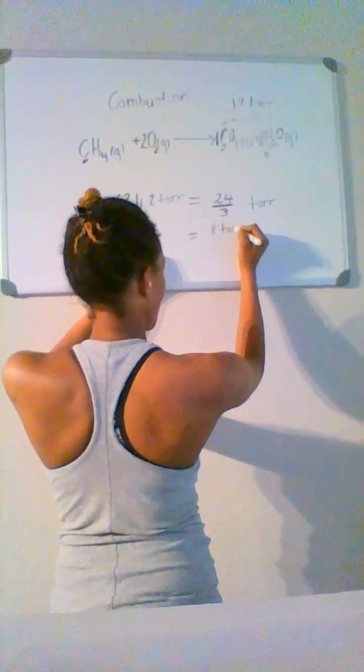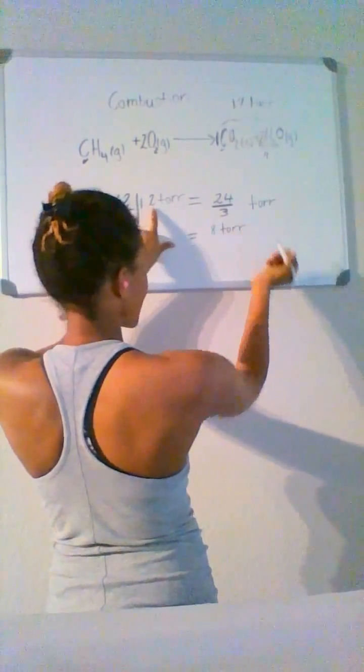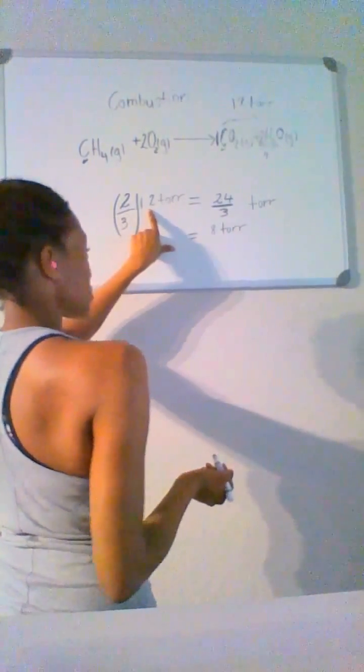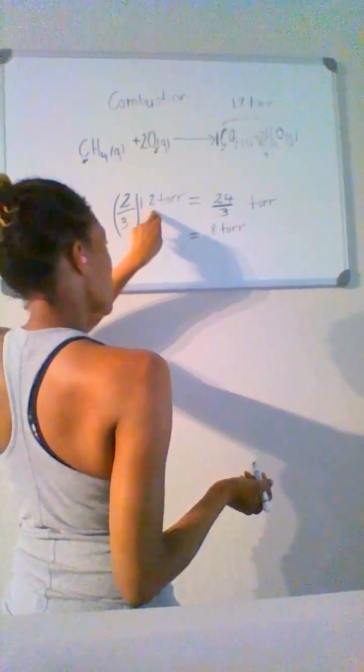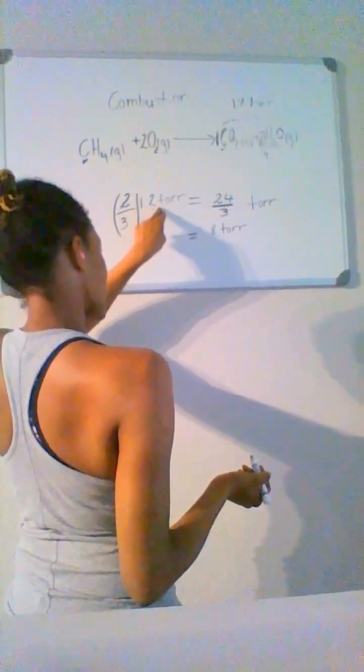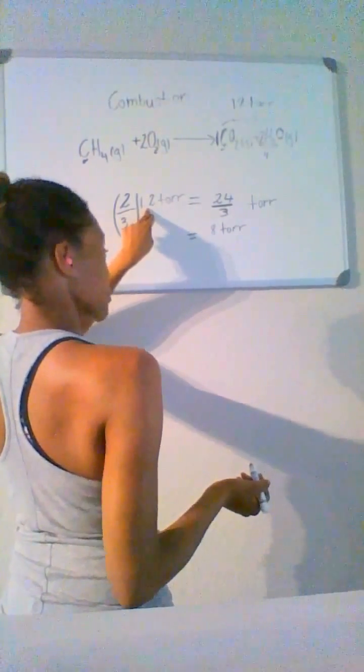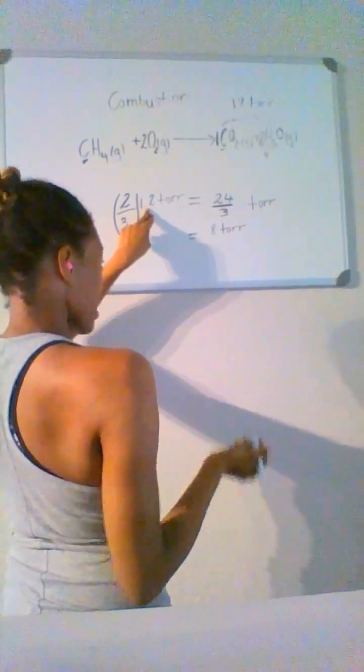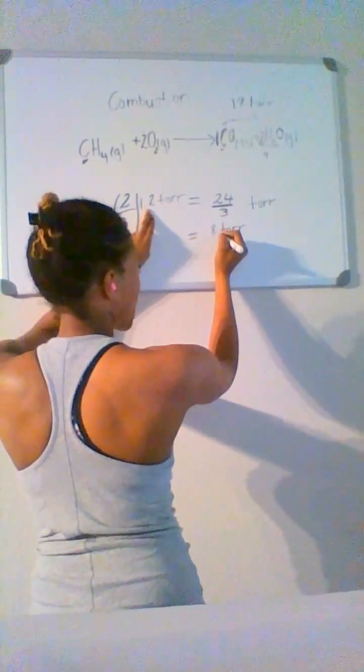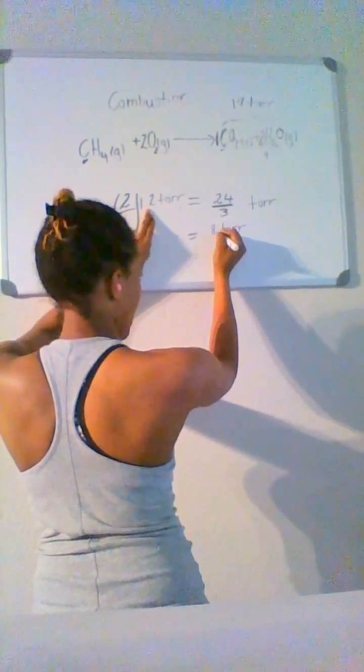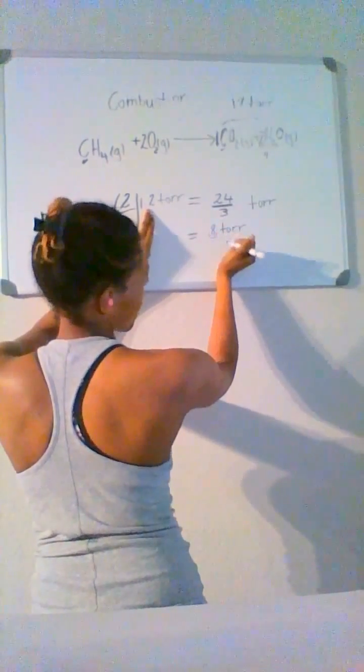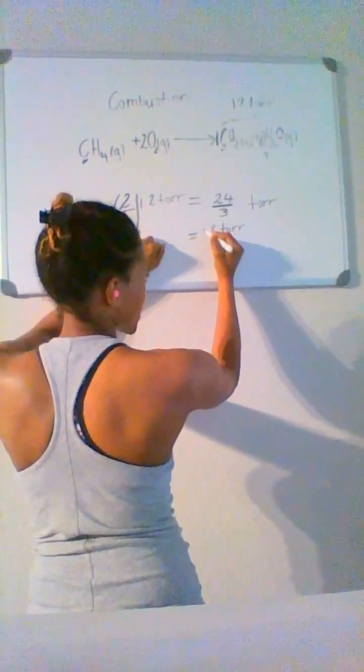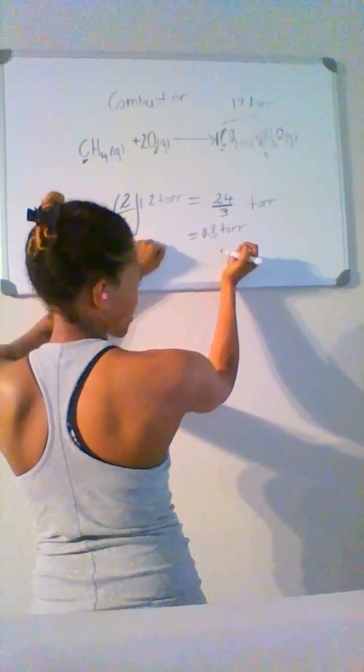So 8 torr so far, but we have to include the decimal place. So because we have our decimal places shifted one space to the left in our multiplier, we also have to do that in the product. And so our answer would be 0.8 torr.